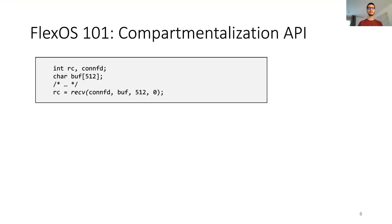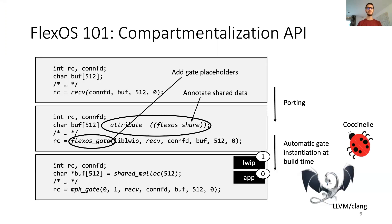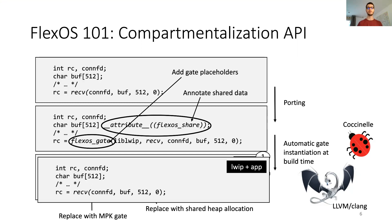Let's take a closer look at the API. In this example, we consider a simple call to receive from the application implemented by the network stack. As part of the porting process, we would annotate shared data and replace cross-library function calls by gate placeholders. Then at build time, if the network stack and the application are placed in different compartments and MPK is used, we would replace stack allocation with, for example, shared heap allocations and replace the gate placeholders with MPK gates. On the other hand, if we put the application and the network stack together, we would not change the stack allocation and we would use a simple function call since they are together.